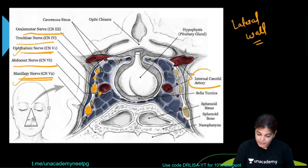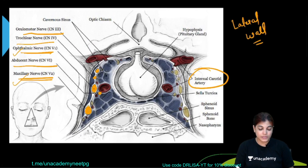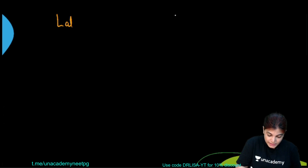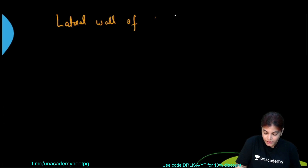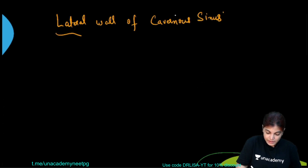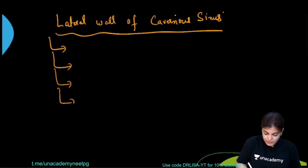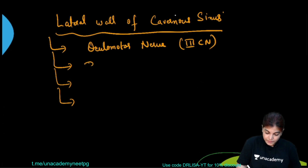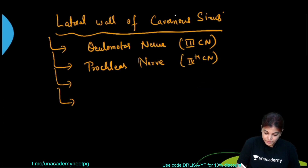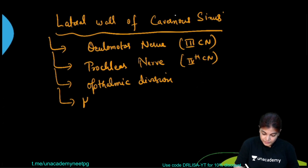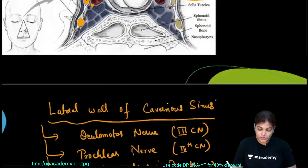Two structures traverse through the interior of the cavernous sinus: the internal carotid artery — the red structure visible inside the sinus — and the abducent nerve, the 6th cranial nerve. To summarize: the lateral wall of the cavernous sinus is related to the oculomotor nerve (3rd), trochlear nerve (4th), and the ophthalmic and maxillary divisions of the 5th cranial nerve.